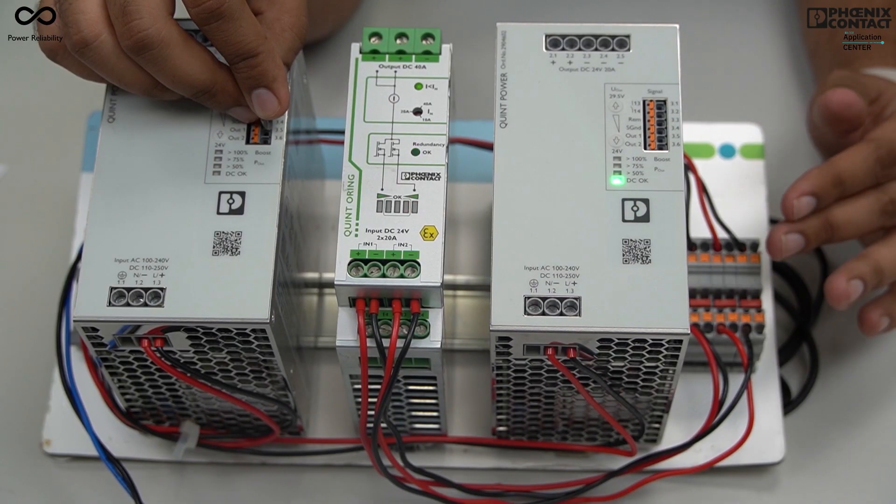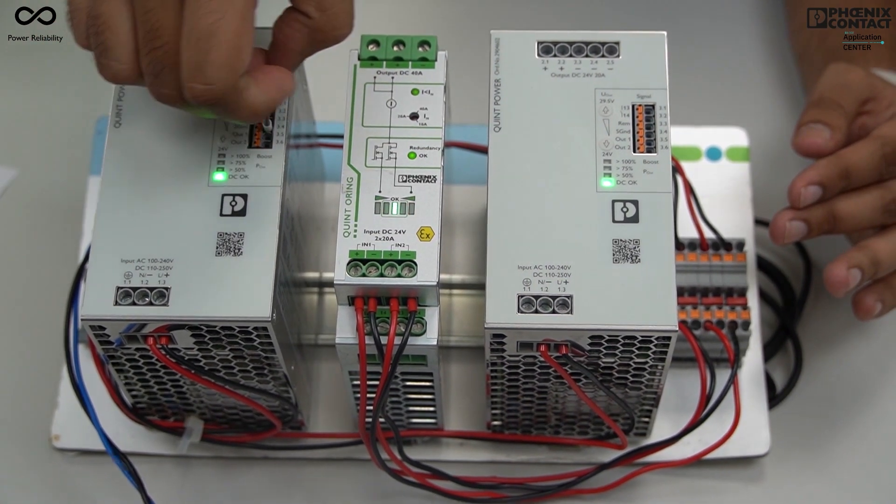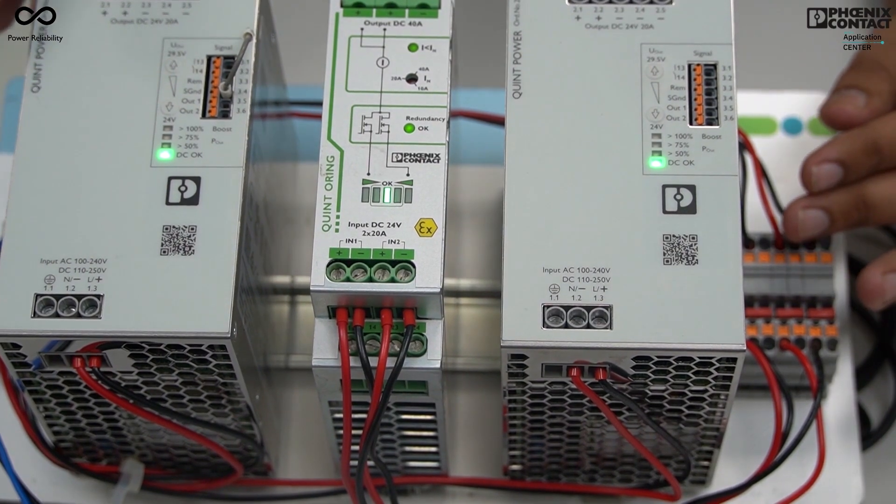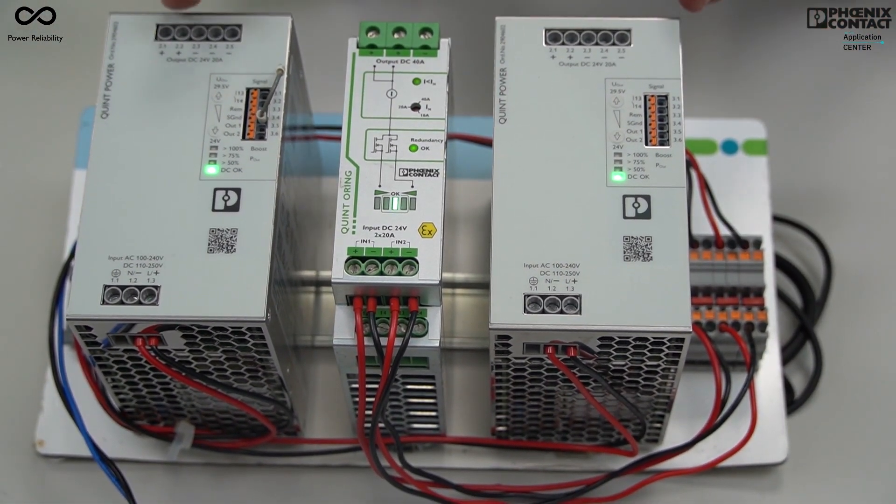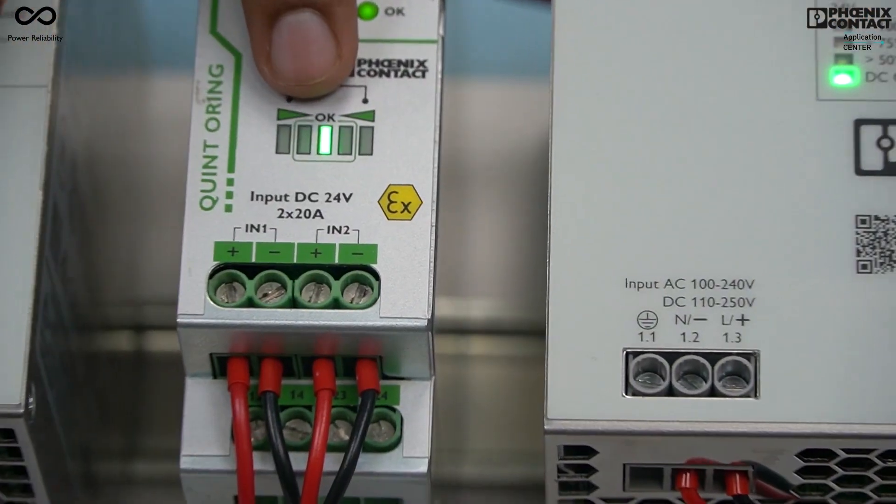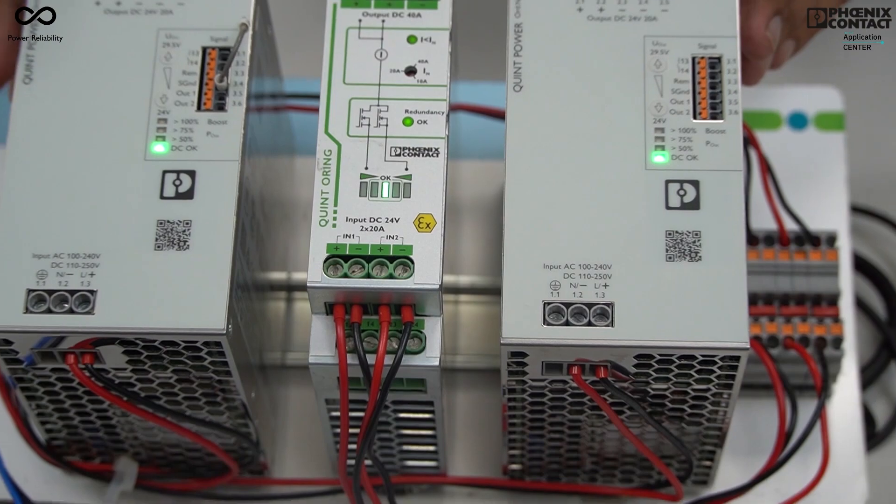Now if the power supply works back again in healthy condition, you can see the auto current balancing is continuously maintained because the centerline LED is glowing and both the power supplies are working perfectly.